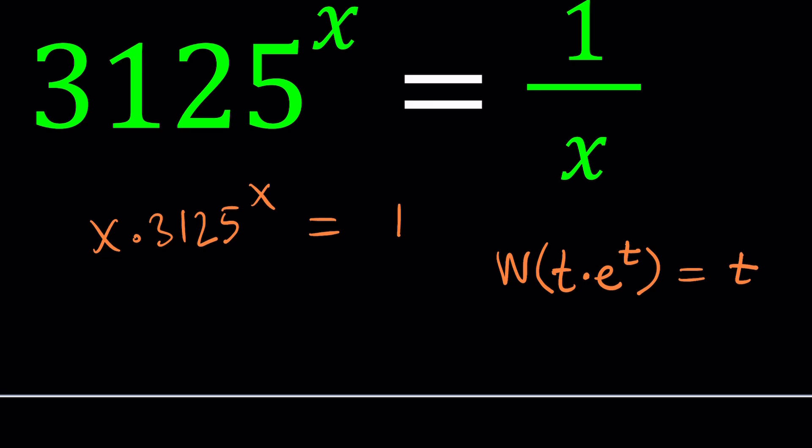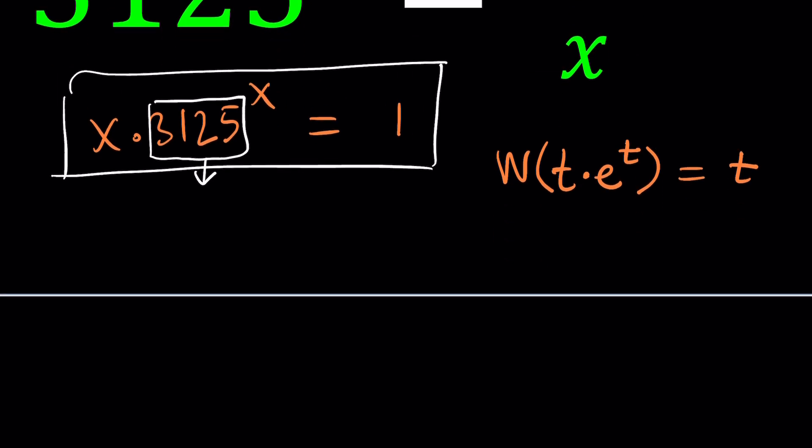The question is then, how do you turn this into that form? We have x times 3125 to the power x. We don't really have the x times e to the x, which would be really nice, but we can get there. How? By changing the base. So we want this to be e, Euler's number, right? Because Euler is awesome. To change it into Euler's number, we're going to consider an identity, which is e to the power ln a is a.